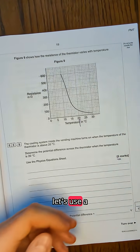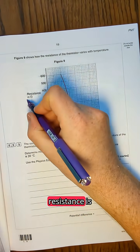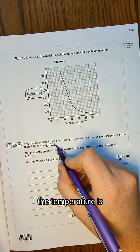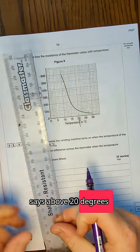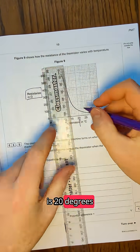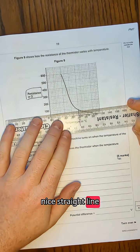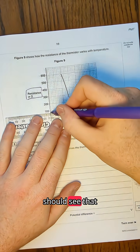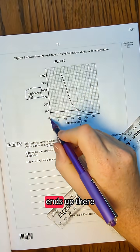So time to get a ruler out. Let's use a ruler to work out what the resistance is if we know the temperature is 20. It says when the temperature is 20 degrees. So we grab our ruler and use a nice straight line. And we go along and we should see that the resistance ends up there.